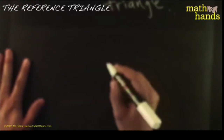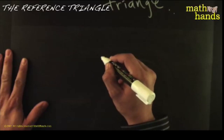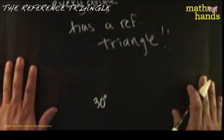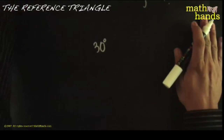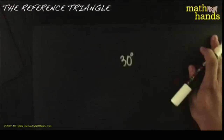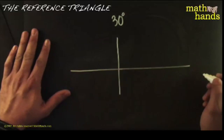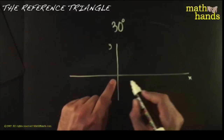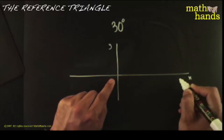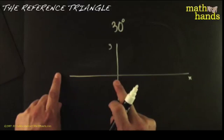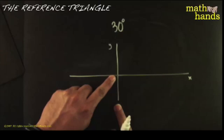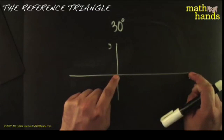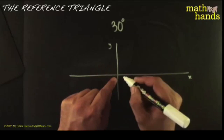You have to start off with of course an angle. Suppose you started with some angle — thirty degrees. According to our statement here, every angle has a reference triangle, so thirty degrees must have a reference triangle. Here's how you cook up a reference triangle: you start off always on the xy plane. This is the x-axis, this is the y-axis, and by definition the reference triangle starts off on the positive x-axis.